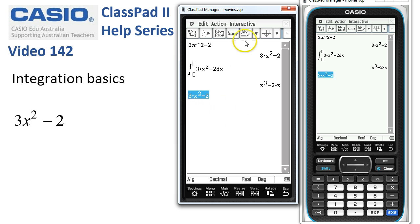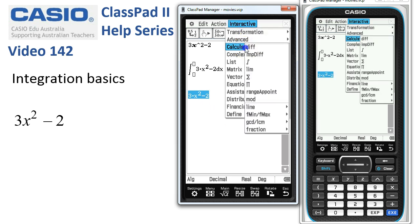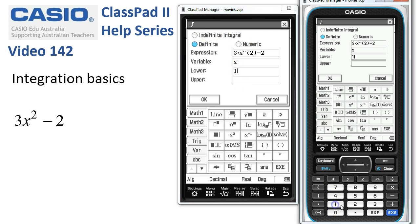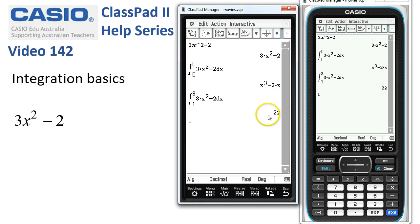But using the interactive tool, interactive, calculate, integrate, we can tap onto the definite option and then it gives us the space to put in our upper and lower limits. So let's pop in one and three for our limits and say OK. And then it's evaluated to be 22 in that instance.